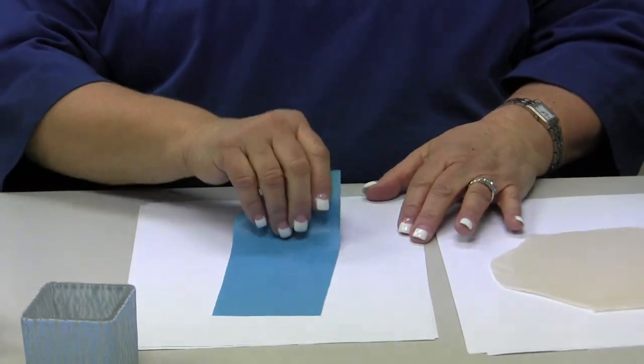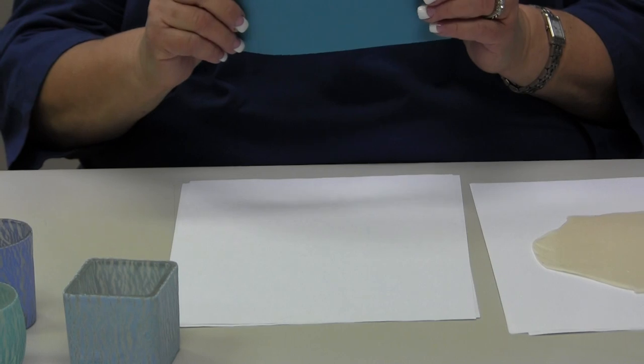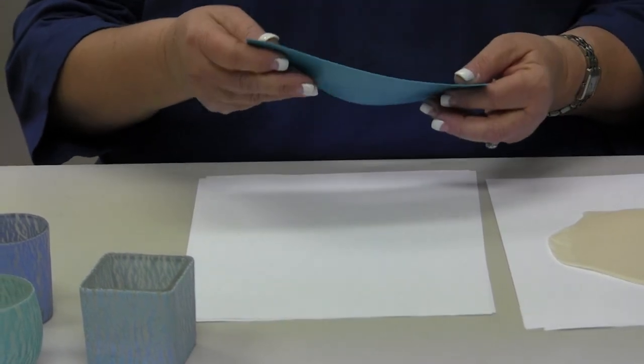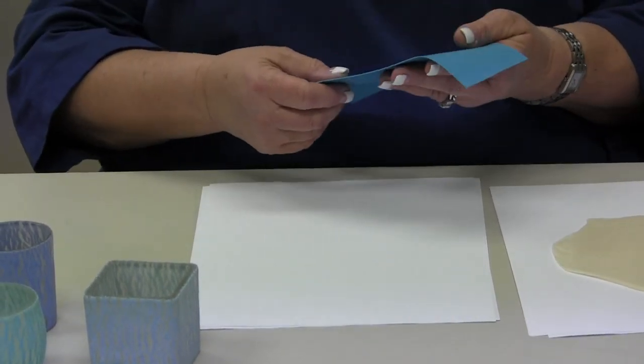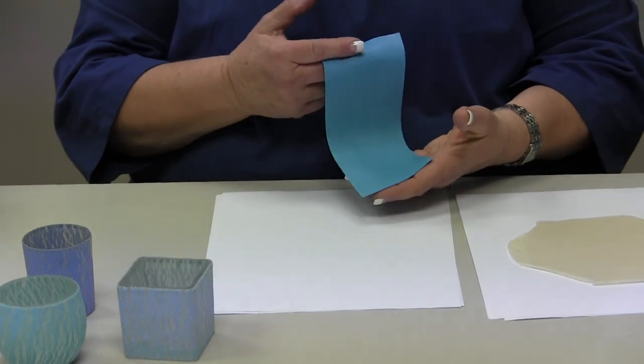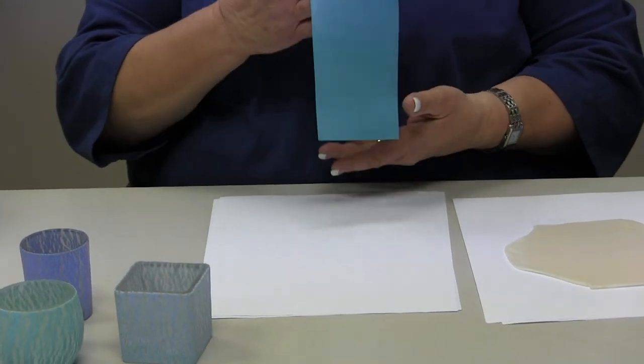The first thing I do is I roll out a sheet of Premo clay. This is Premo turquoise and I have it rolled on probably a six or seven so it's pretty thin.